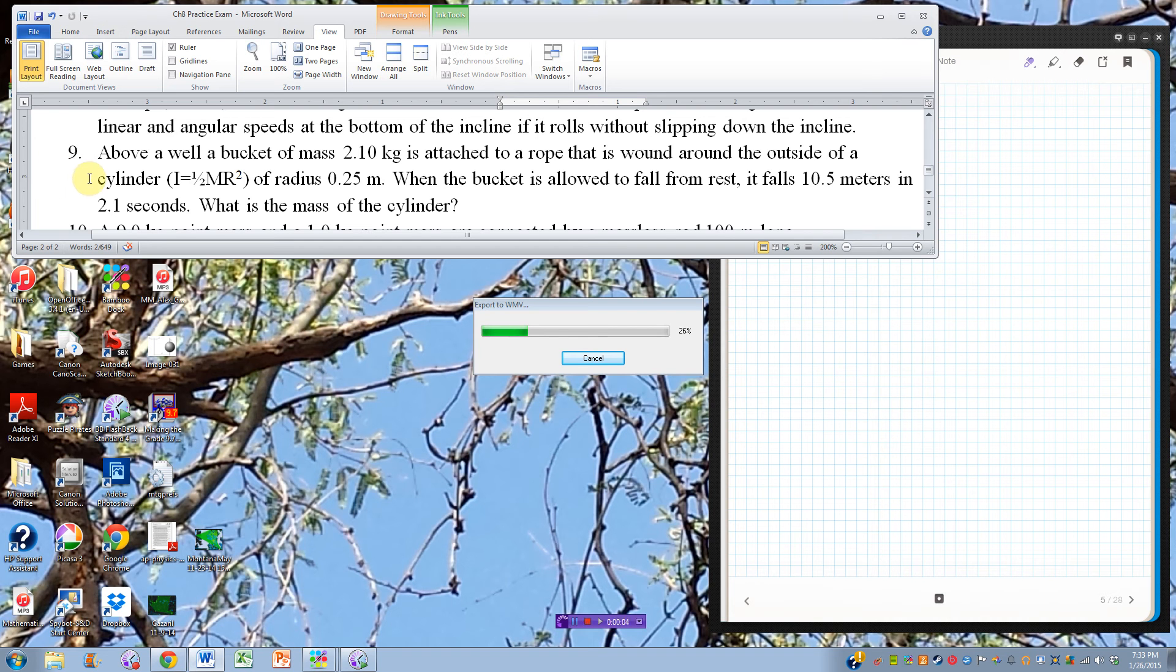Chapter 8, practice exam number 9. Above a well, a bucket of mass 2.1 kilograms is attached to a rope that is wound around the outside of a cylinder of radius quarter of a meter. When the bucket is allowed to fall from rest, it falls 10.5 meters in 2.1 seconds. I want to know the mass of the cylinder.